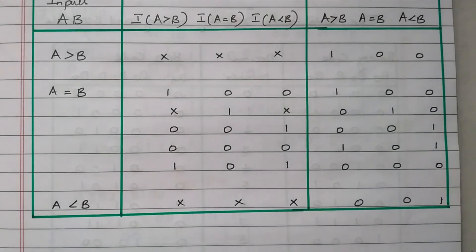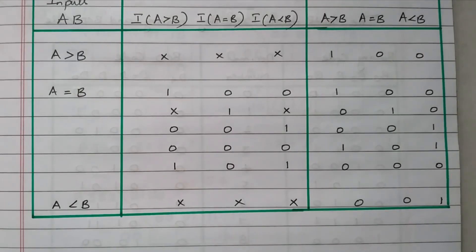In this video we discussed the IC7485 4-bit comparator. It directly compares two four-digit numbers and gives the output of whether both are equal, A is greater, or B is greater. Subscribe the channel for more videos and notifications. Soft copy of this material is available in the drive; the link is given in the description box. Thank you for listening.